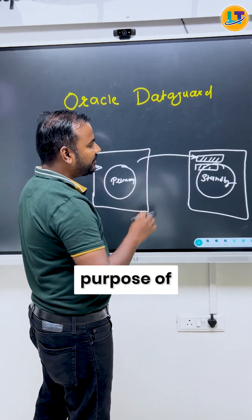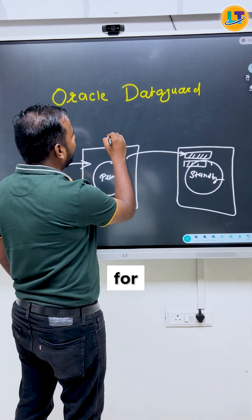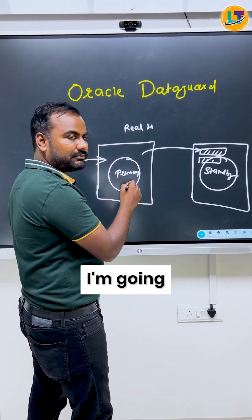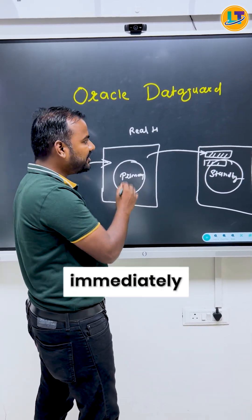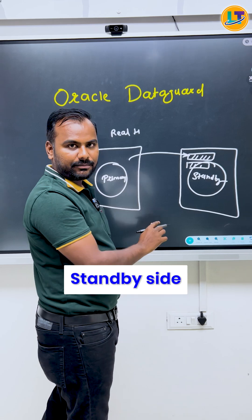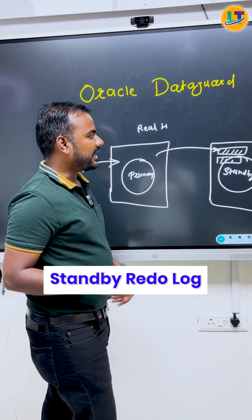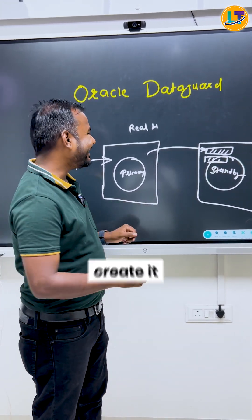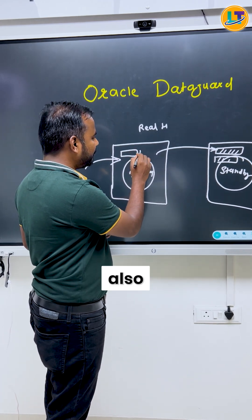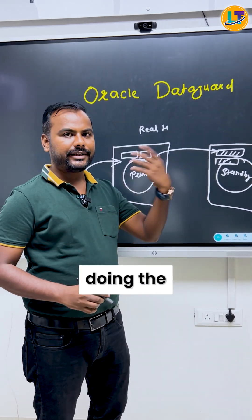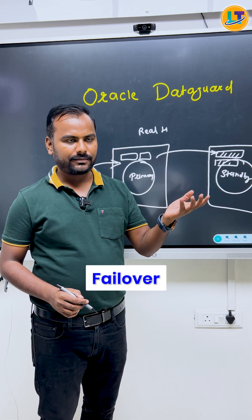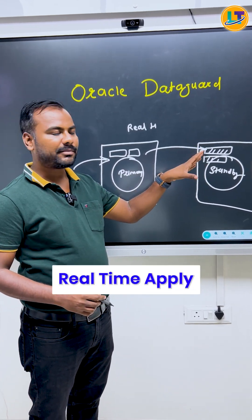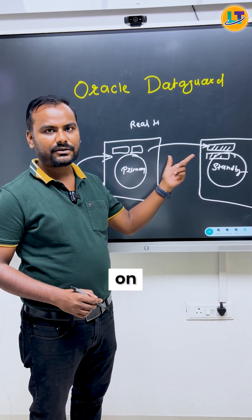The main purpose of standby redo log is for real-time apply — whatever changes are made on the primary will immediately be visible on the standby side. Standby redo log is always available on the standby side, but you can also create it on the primary side, just in case you are doing activities like switchover and failover. So the standby redo log is used on the standby side for real-time apply.